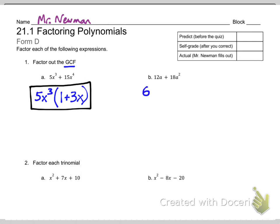For part B, 6 is the greatest common factor for the coefficients, and a, the variable, is the greatest common factor between the variables. If you see the same variable on both terms, remember you can always take out a variable. When you take out 6a from 12a, you're left with 2. When you take out 6a from 18a², you're left with 3a. And that is the answer for part B.